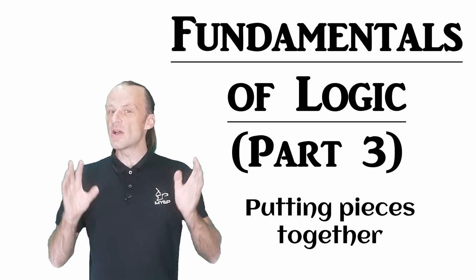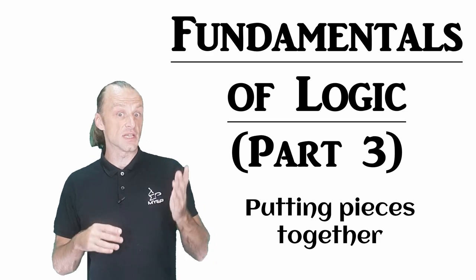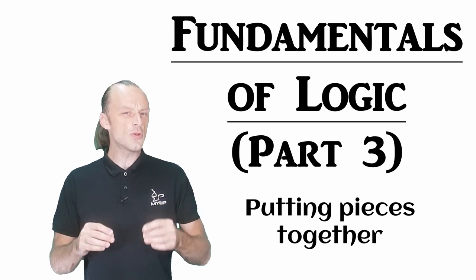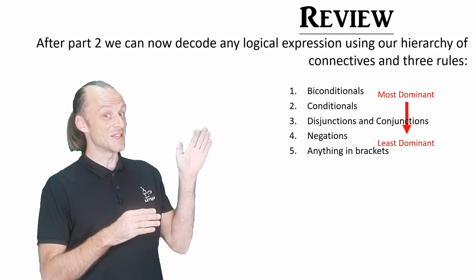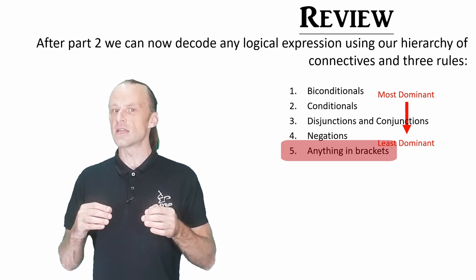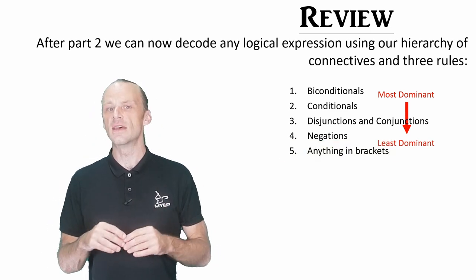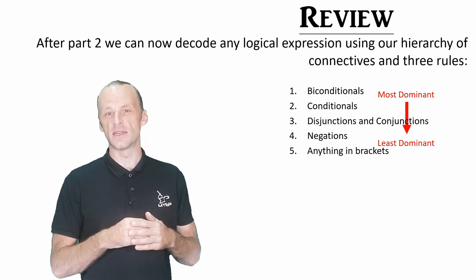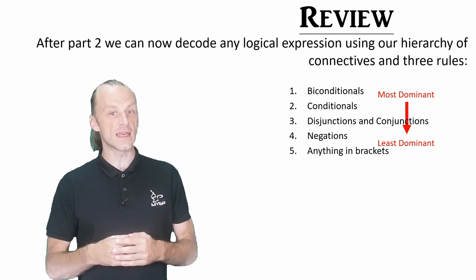We're going to start by decoding longer logical expressions, so let's just review our rules from part two. There is a dominance order for the connectives. Here it is. We use brackets to change this order. Anything inside the brackets is less dominant than anything outside the brackets, similar to how we use brackets in arithmetic.